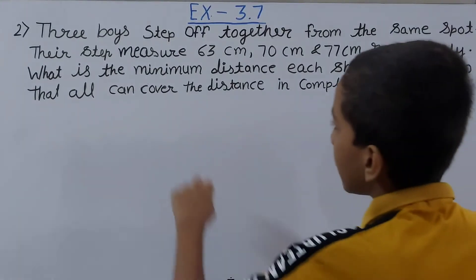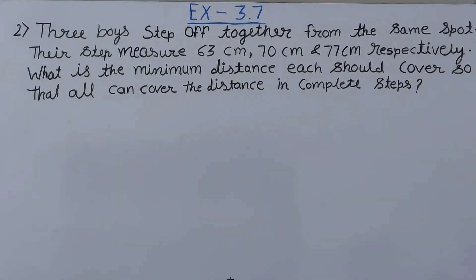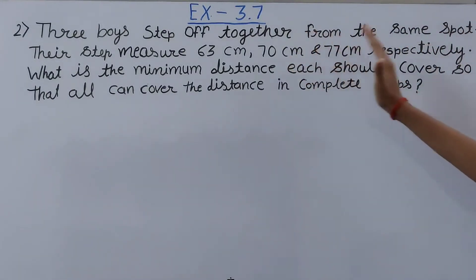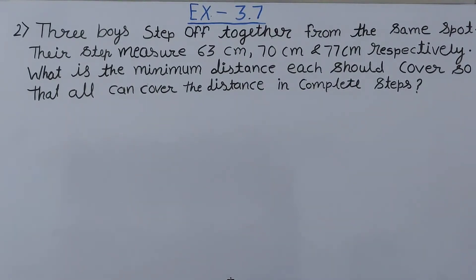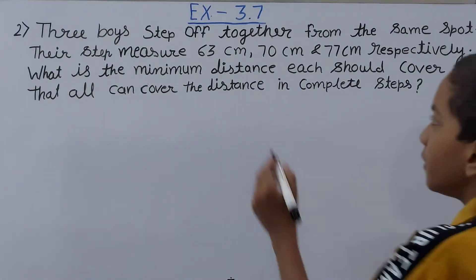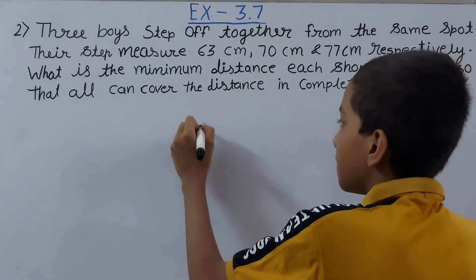In the previous question the keyword was 'maximum'; now it is 'minimum.' Minimum means smallest, and since we need to find a common distance that is least, we need to find the LCM — the Least Common Multiple. So we need to find the LCM of 63, 70, and 77.